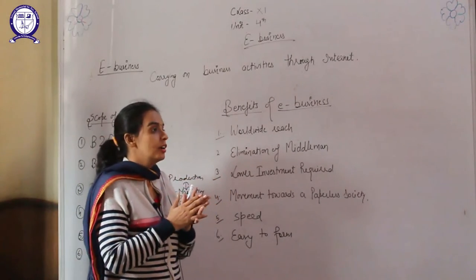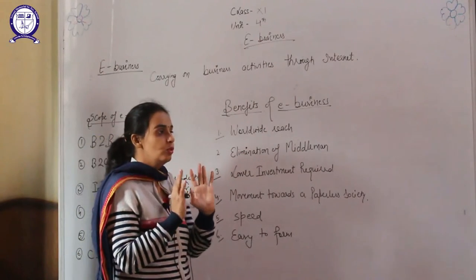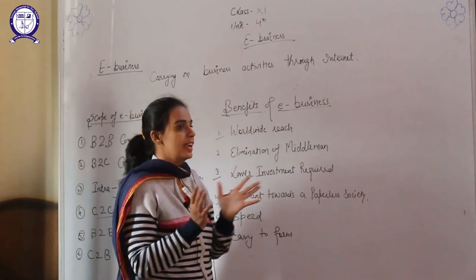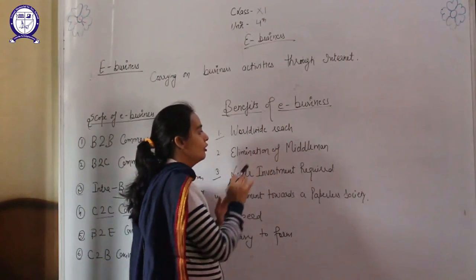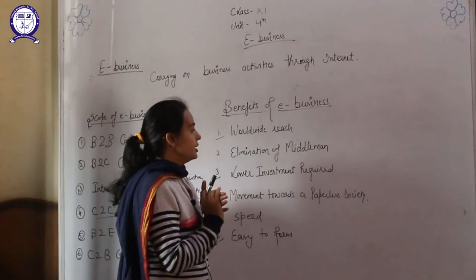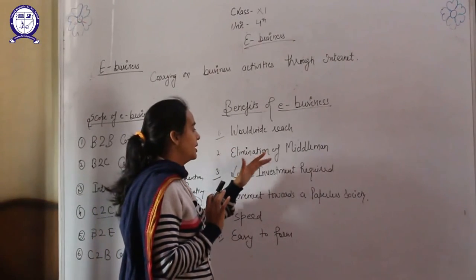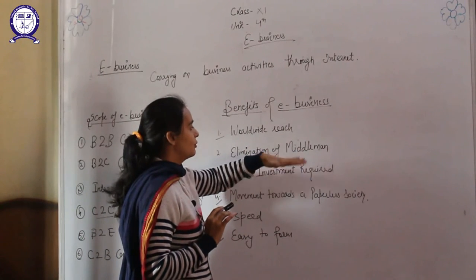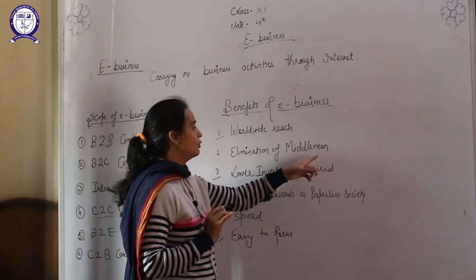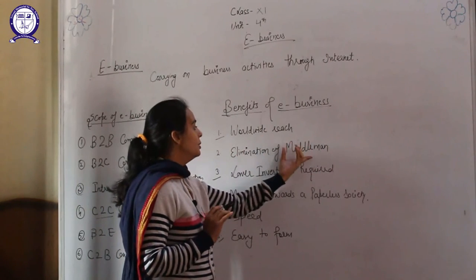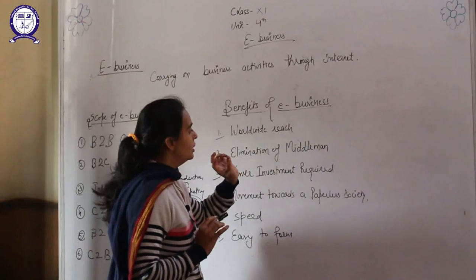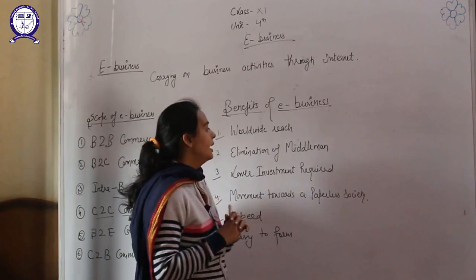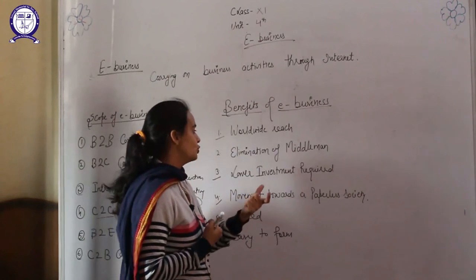Customers who are sitting in another country can be reached, so e-business has worldwide reach at a large scale. The second benefit is elimination of the middleman. In the era of e-business, there is no role of the middleman — it eliminates the middleman from the trading process. This is beneficial for both parties — for the consumer as well as the businessman — as it saves cost.